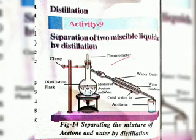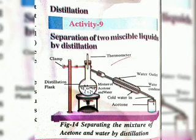These miscible liquids can be separated by the process of distillation. So with the process of distillation, how can we separate water and acetone? The aim of this activity is to separate two miscible liquids — water and acetone — by distillation.